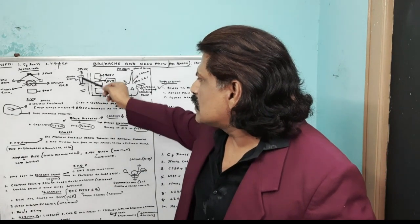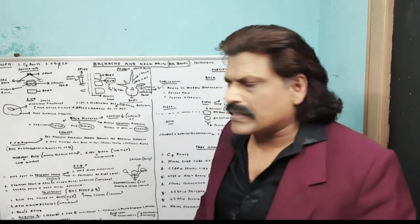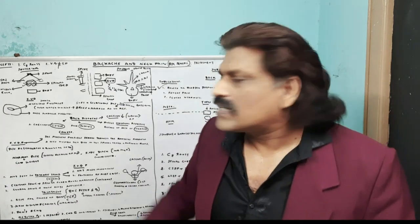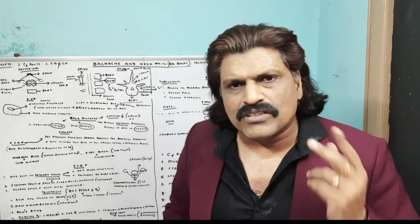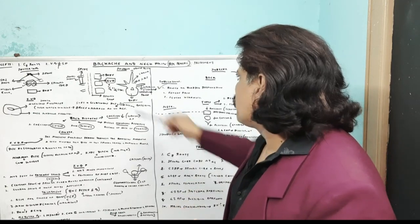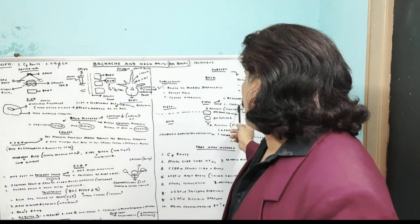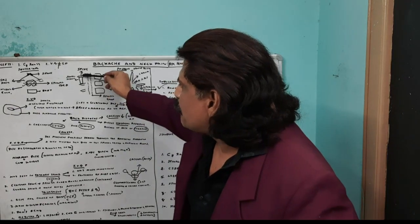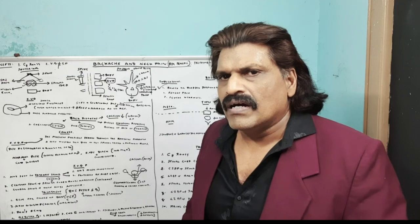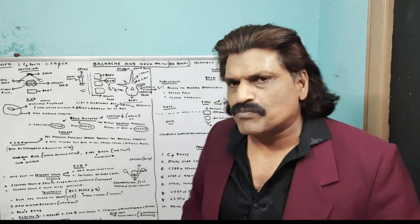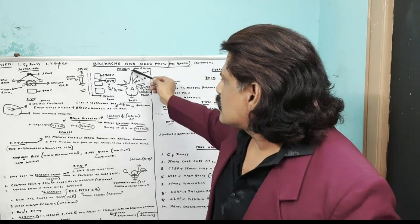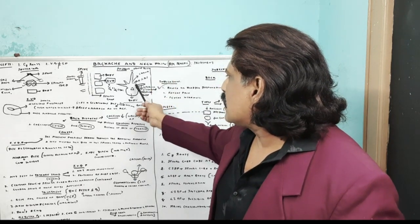There is a spinous process at the back. In surgery, we either perform discectomy — removing the disc — or stabilization, which is fusion of the bony spinal segments. In the axial section, you can see the body, spinous process, and transverse process.